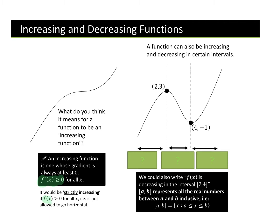Strictly increasing is just when our gradient is greater than zero for all of x. If we have a look at this cubic, we can see that our gradient here is a positive gradient. So we can see when x is less than or equal to 2, we're increasing. So this is increasing for when x is less than or equal to 2.